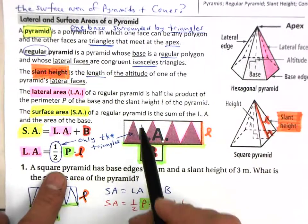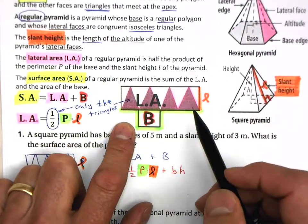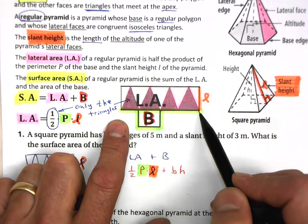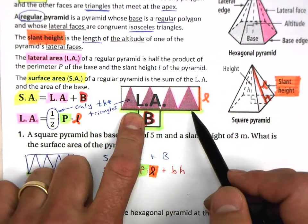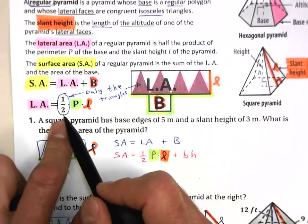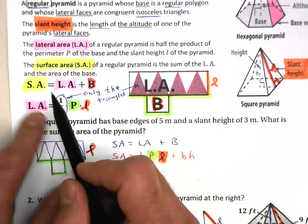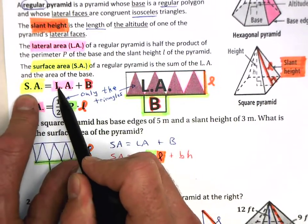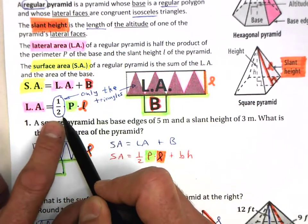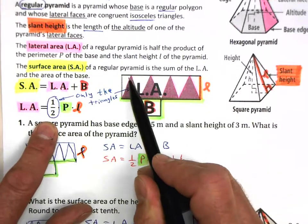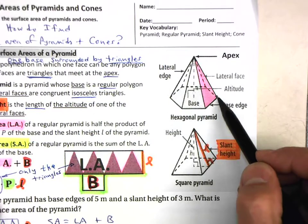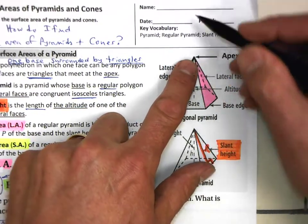We always start out with a net, and we want to find the surface area of this guy. And this is a rectangle, but notice now that I do not want the entire rectangle. Nope, I only want half of that. So that's why my equation, it's still the same for surface area, equals lateral area plus big base.